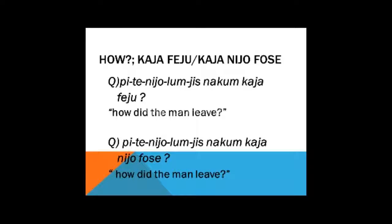Let's have a closer look at how. Latropath distinguishes two concepts of how: kaya feyu — how in terms of manner; kaya nia fose — how in terms of means. Based on the statement the man left: pita yi alum yisna kum kaya feyu means how did the man leave in terms of manner — for example, the man left laughing, the man left hopping on one leg. Whereas pita yi alum yisna kum kaya nia fose also translates as how did the man leave, but in terms of means — for example, the man left through the back door, the man escaped through the window.